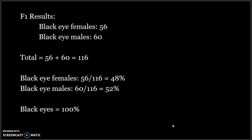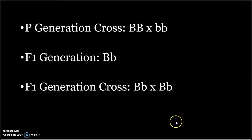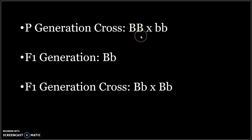Moving forward, we're assuming that black eyes are dominant to white and that the gene is not on the X chromosome. We're going to represent the black eye allele with a capital B and the white eye allele with a lowercase b. You can use any notation you like to work through the problem. So the P-generation individuals with black eyes have the genotype BB, and the white eye individuals are bb.